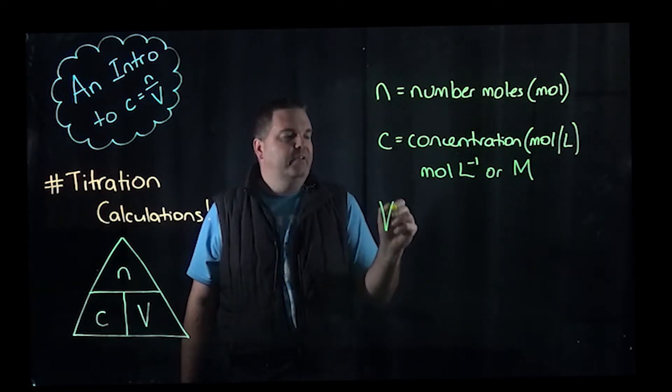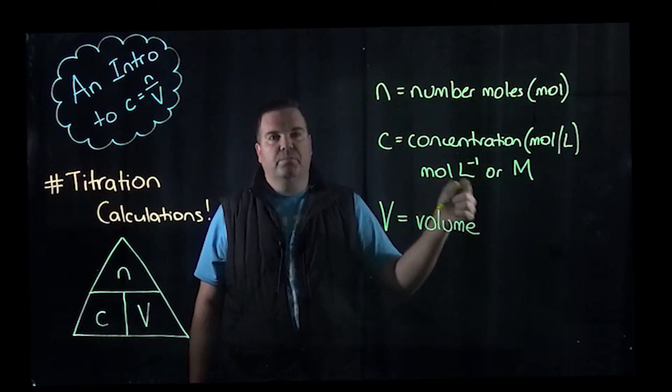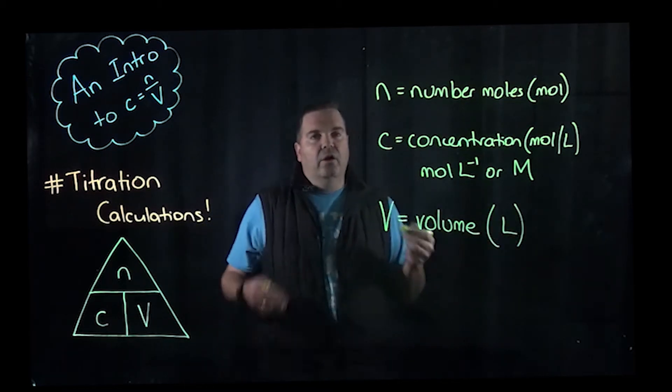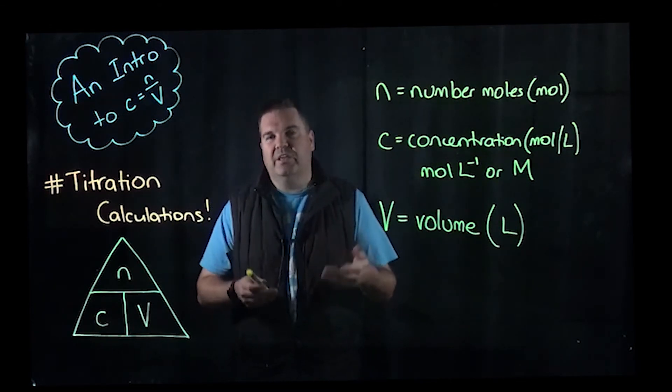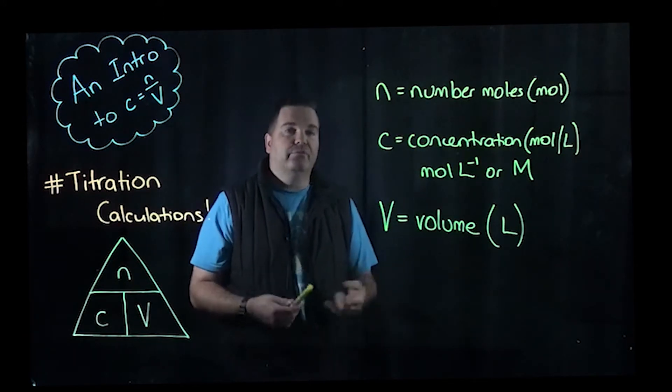Big V, capital V is the volume. And because our concentration is in moles per litre, the volume must be in litres. Now, quite often when we're doing titrations or any sort of chemistry, we don't operate on big litre scales generally. So you're going to have to remember to convert.